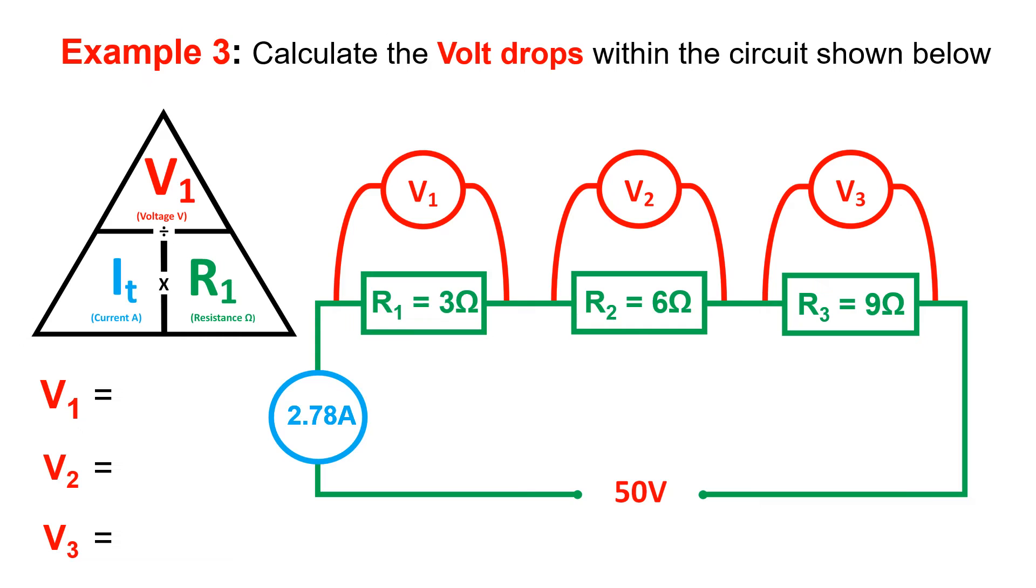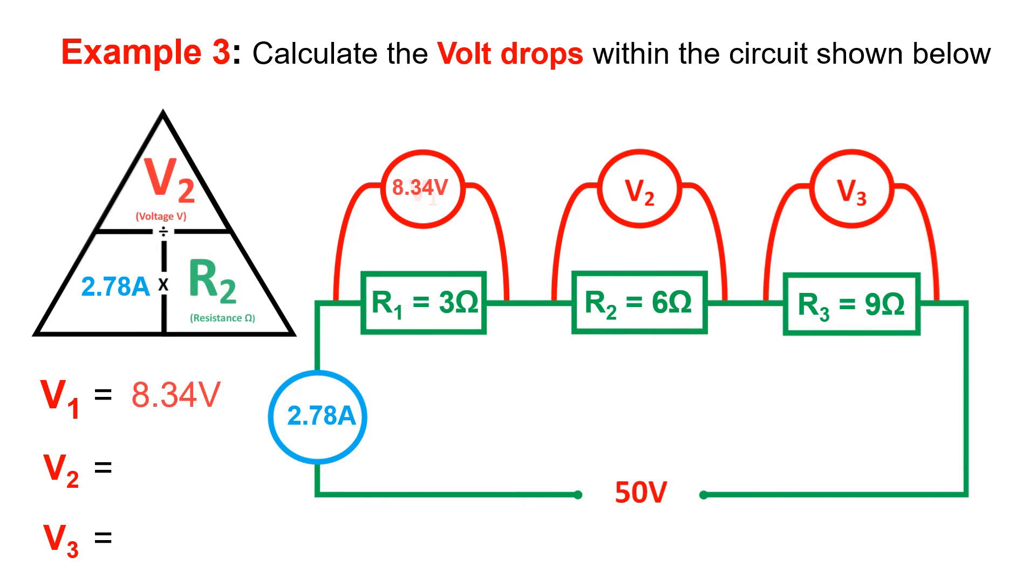For example, to calculate V1 across resistance 1, we use the Ohm's law triangle, but this time we use our current total as the constant. So let's move the IT to our Ohm's law triangle. Current total of 2.78 amps times the 3 ohm resistance equals a voltage drop of 8.34 volts. This means that the voltage drop across R1 is 8.34 volts.